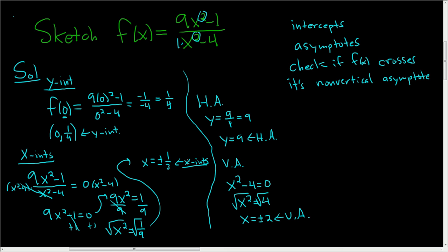So we have found both intercepts, the y-intercept and the x-intercepts. We found the horizontal asymptote, y equals 9, and we found the vertical asymptotes, x equals plus or minus 2. The last thing to do before we graph it is to check to see if it crosses its non-vertical asymptote.